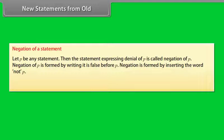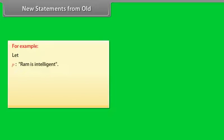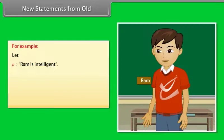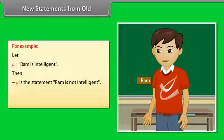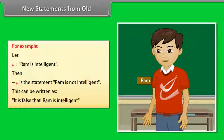New statements from old. Negation of a statement: Let P be any statement. Then the statement expressing denial of P is called the negation of P. Negation of P is formed by writing 'It is false that' before P, or by inserting the word 'not.' Negation of statement P is denoted as ~P (not P). For example, let P be 'Ram is intelligent.' Then not P is 'Ram is not intelligent,' or 'It is false that Ram is intelligent.'